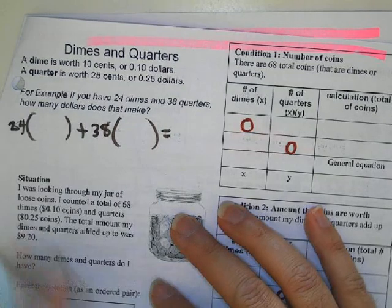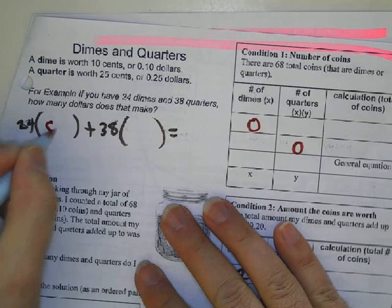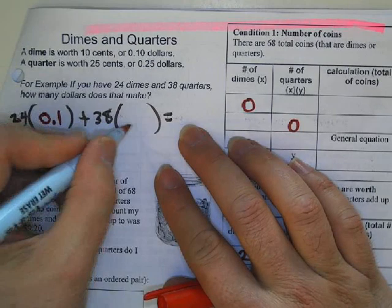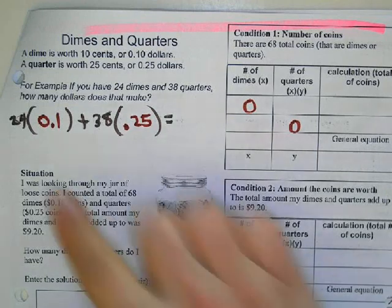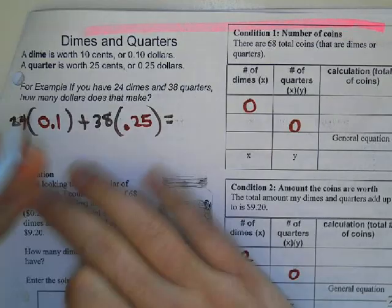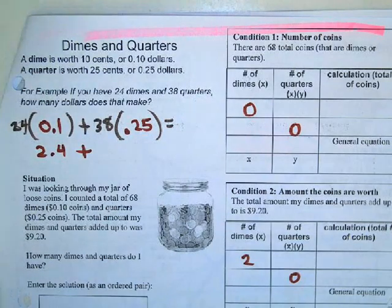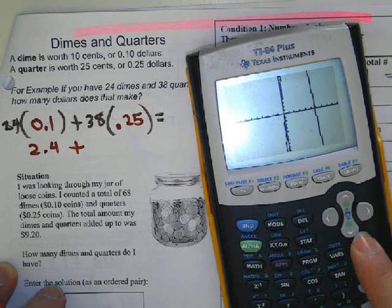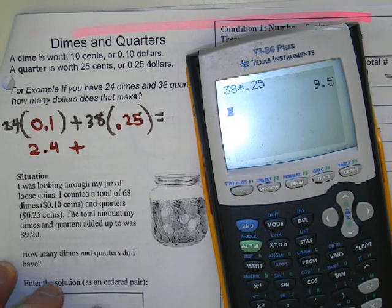Well, we know a dime is worth 10 cents, or 0.1 of a dollar. We know a quarter is worth 0.25. So now I can do this calculation. This is going to give me 2.4, and 38 times 0.25 is 9.5.